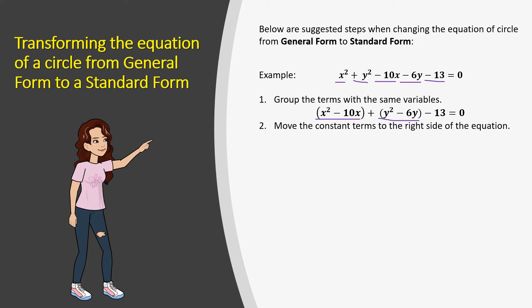Now let's move the constant term to the right side. In our example, we have only one constant term, which is negative 13. Since we transpose it to the right side, it will become positive 13.